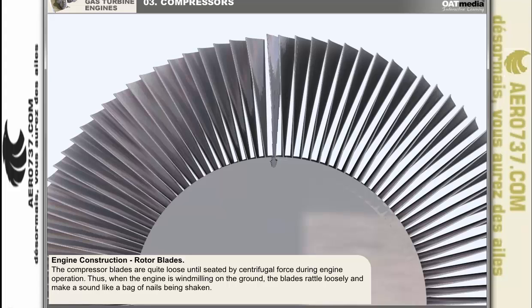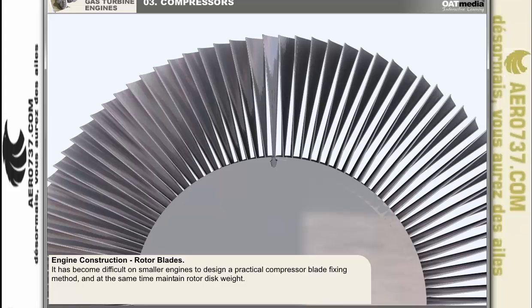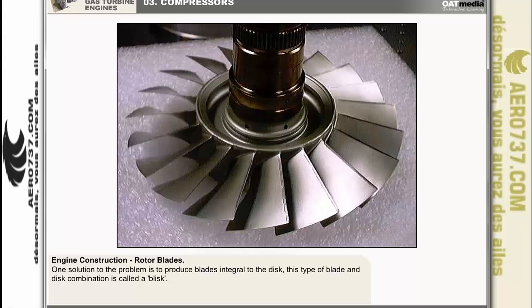The dovetail method of fixing does not hold the blade immovable in the disc — in fact, the blades are quite loose until firmly seated by centrifugal force during engine operation. Thus, when the engine is windmilling on the ground, the blades rattle loosely making a sound similar to a bag of nails being shaken. It's become increasingly difficult on smaller engines to design a practical compressor blade fixing method while maintaining minimum rotor disc weight. One solution is to produce rotor blades integral with the disc — this type of blade and disc combination is called a blisk.